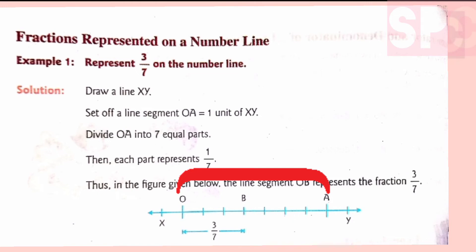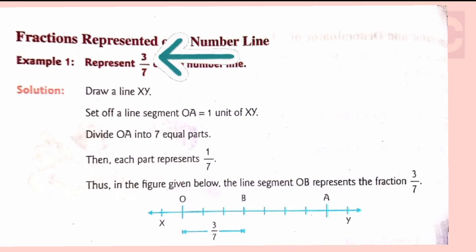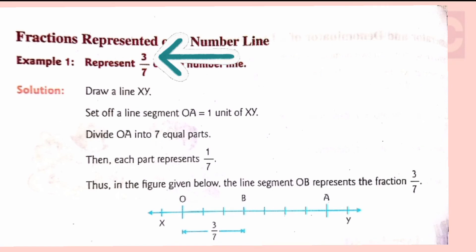Now let's divide OA into 7 equal parts using a ruler: 1, 2, 3, 4, 5, 6, 7. In this way, we have divided OA into 7 equal parts. Now, the numerator of this fraction is 3. It means out of the 7 parts, we have to consider 3 parts.